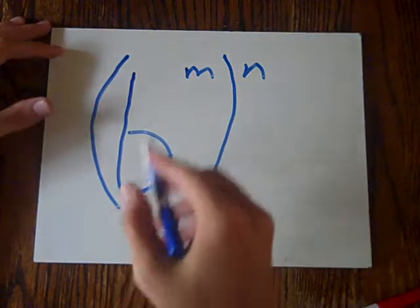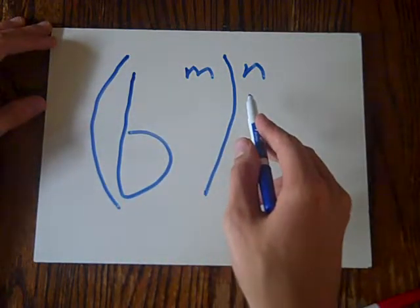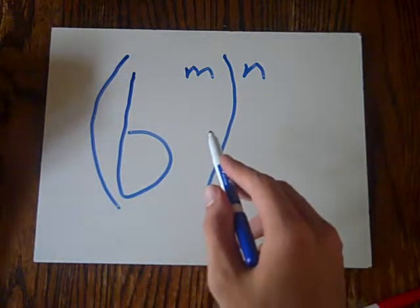Well, this is b to the power of m to the power of n. So what happens here?